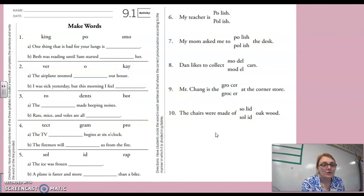Okay, if you have your skills pages, the page today is 9.1. What you're going to do is have students combine two of the three syllables to create a word that completes a sentence and write the word on the line provided. So for example, look at number one. The three pieces we have are king, po, and small. Okay, so you're going to put two of them together to make a word.